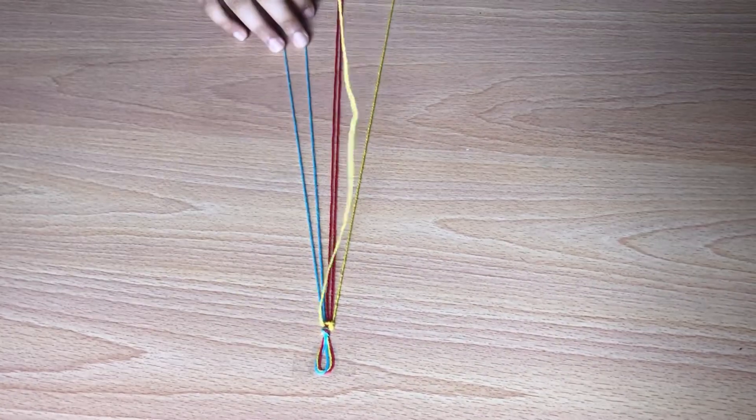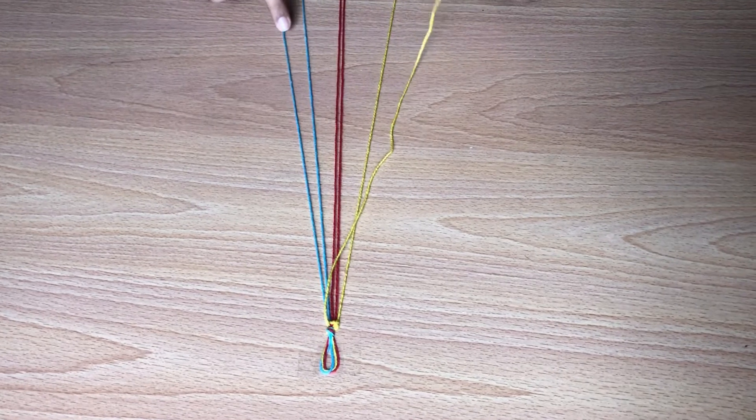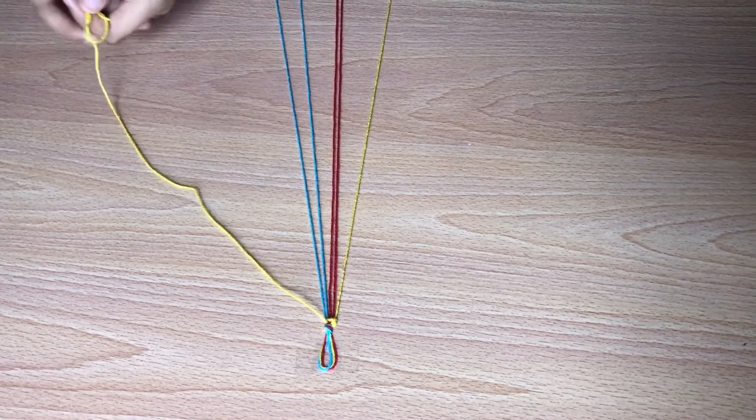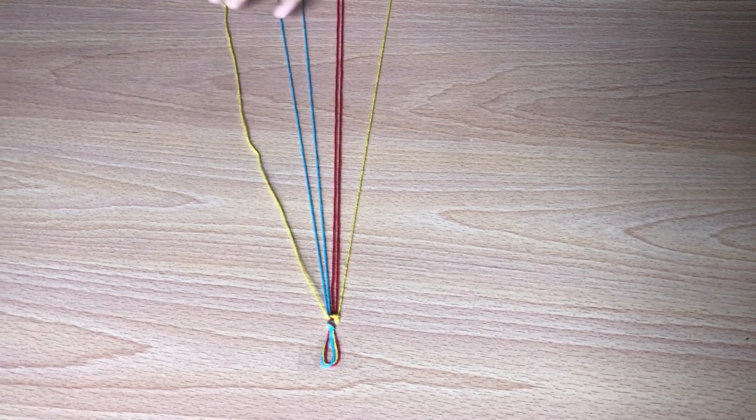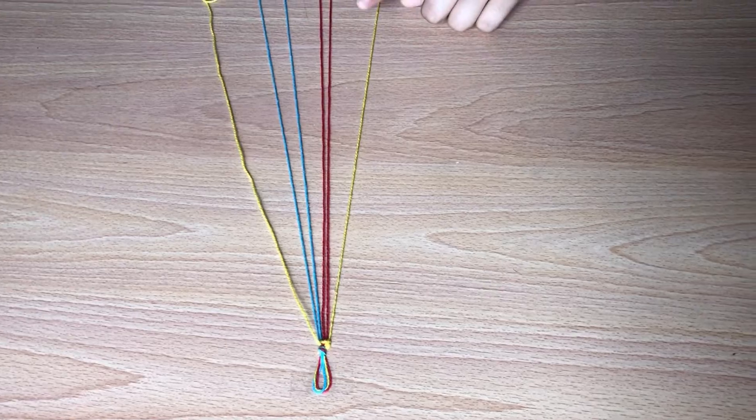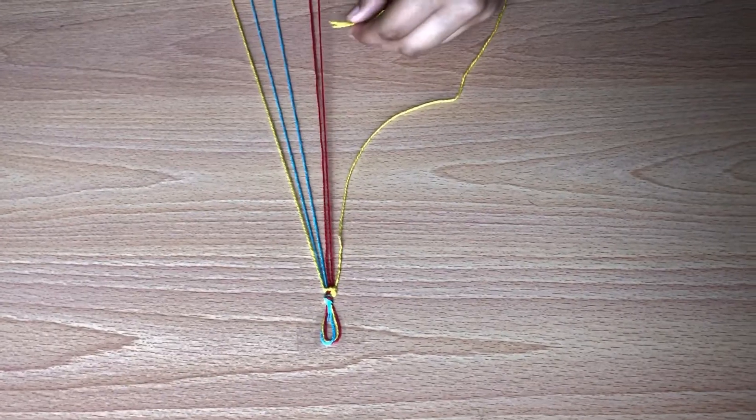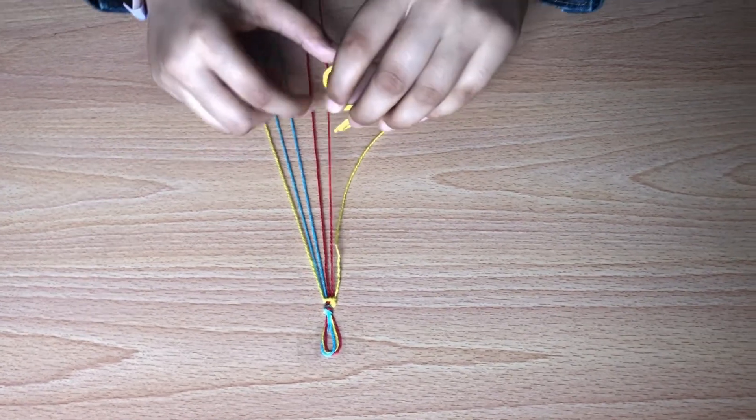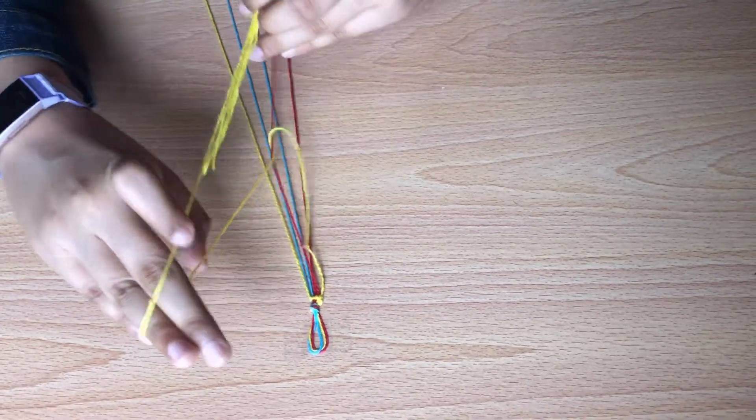Now after you're done with the last blue string take the string in your hand and put it on the other side. Again start off with the left most string, make a four and then pull tight to knot.